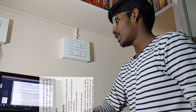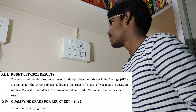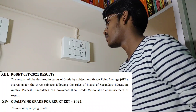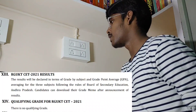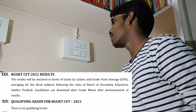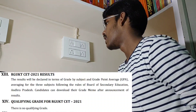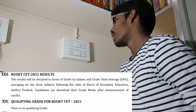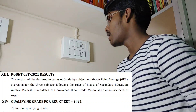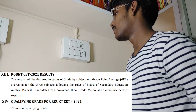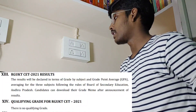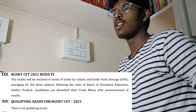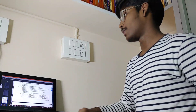Coming to RGKT SET 2021 results: the results will be declared in terms of grade by subject and grade point average for the three subjects, following the rules of the Board of Secondary Education, Andhra Pradesh. Candidates can download their grade memo after the announcement of results from the official website. One important point to note: there is no qualifying grade for RGKT SET. Many of you follow a myth that qualifying marks will be given, but there are no qualifying marks for RGKT SET 21.